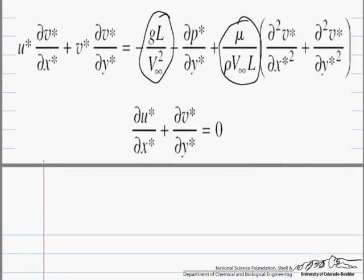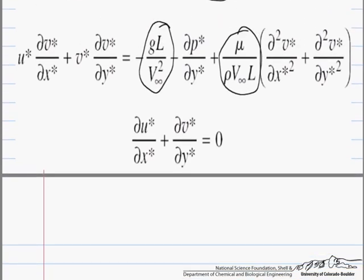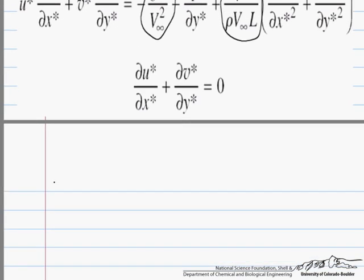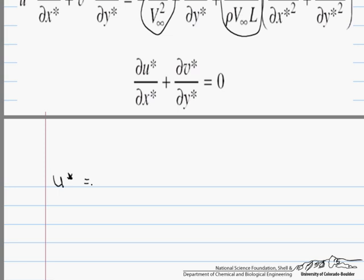The first thing that we need to do is define our non-dimensional variables. We choose a reference variable and then take our variable and divide it by it. So here we are going to take this as v₀ or v free stream, so our u* is u over v free stream. We do the same, and we can use the same reference for both u and v. We do it for x, so that is x over L, as well as y*, which is y over L.